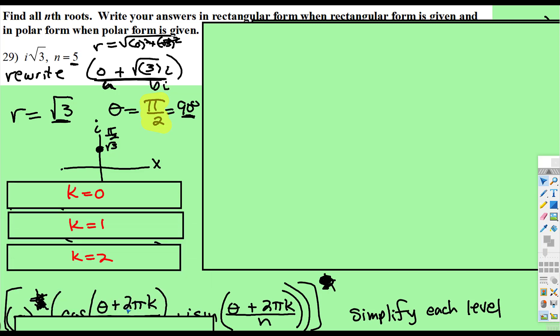And then, so the k is going to represent the number of times we find our roots. So for k, we start with 0, and we count until we have 5. So 0, 1, 2, that's 3, 4, 5. So our k is going to be from 0 to 4, and that will represent our 5 roots.